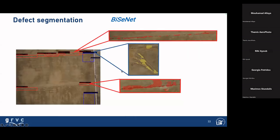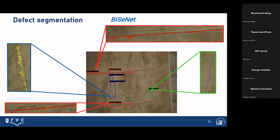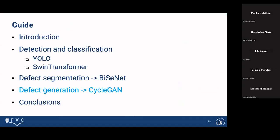Here are some examples where you can see spallation and how segmentation is obtained. Here is another image showing crack, spallation, and corrosion. Here you have more examples seen previously, showing how the segmentation looks.